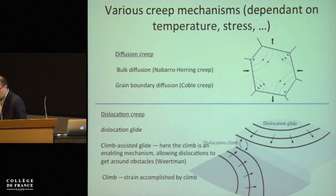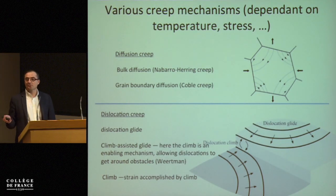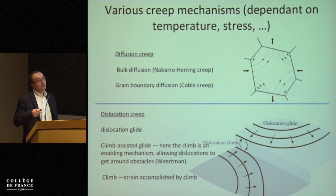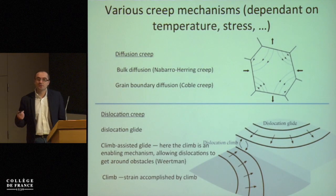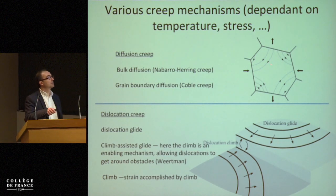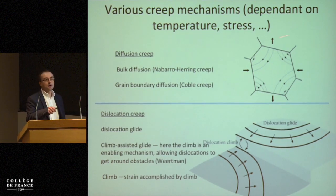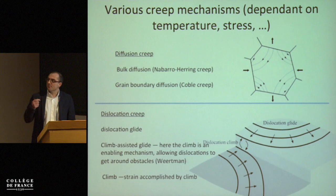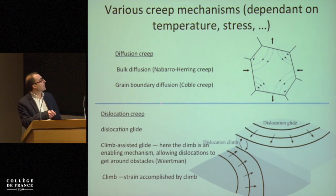When we talk about creep mechanisms, we usually distinguish between two main mechanisms. The first is diffusion creep, where point defect diffusion is mainly involved in the deformation — this can occur either in the bulk of the grain or through diffusion on a grain boundary. The second mechanism is called dislocation creep.